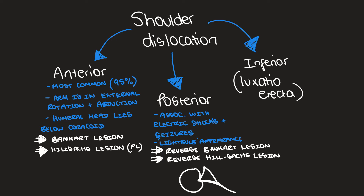In this diagram, which is a schematic of an axial slice through a posteriorly dislocated shoulder, you can see that the glenoid is impacting into the anteromedial aspect of the humeral head, resulting in an impaction fracture — this is a reverse Hill-Sachs lesion. Corresponding to this, in the posterior labrum, you'll get some injury, and that is the reverse Bankart lesion.